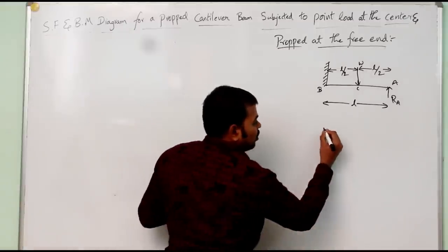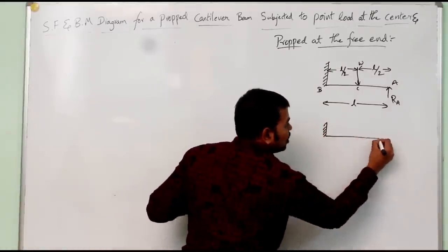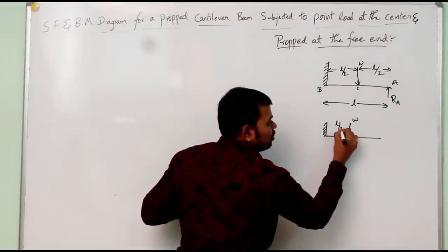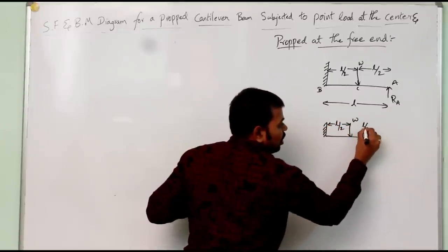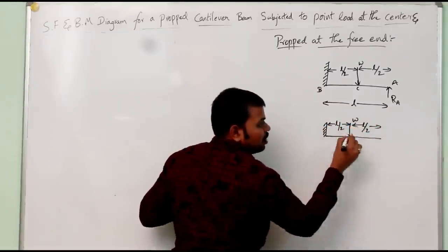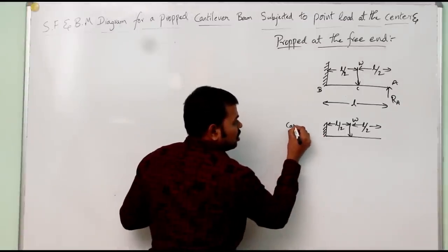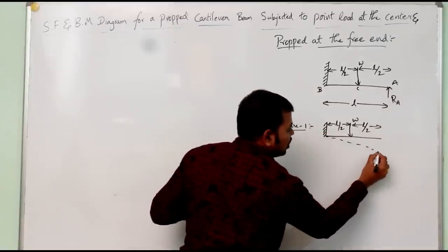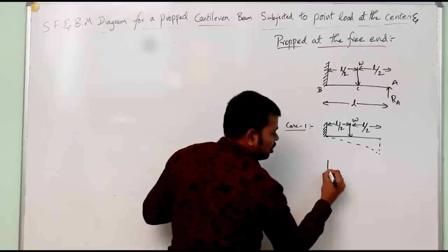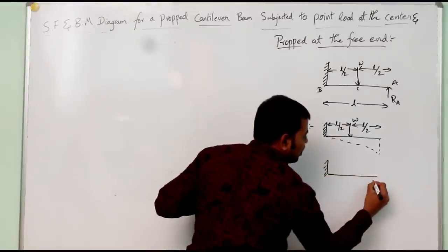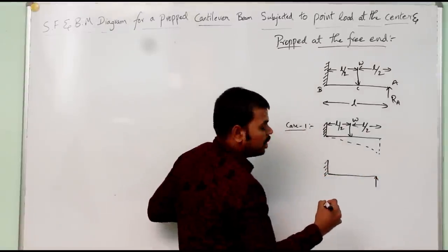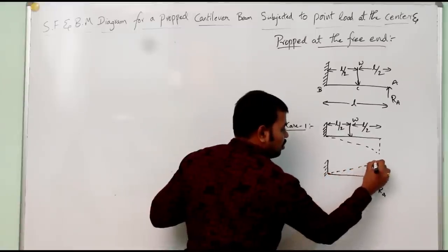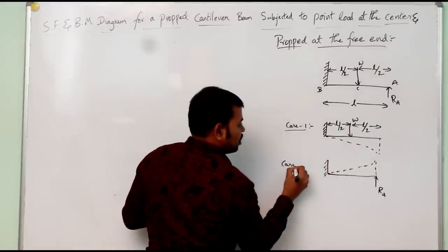In Case 1, we consider a cantilever beam subjected to a point load W at a distance of L/2 from the fixed end and L/2 to the free end. Due to this applied load, there will be a downward deflection of the beam. In Case 2, we consider the cantilever beam subjected to the prop reaction Ra at the free end, which causes the beam to deflect upward.